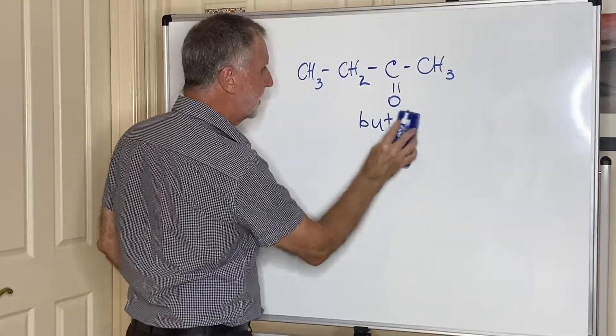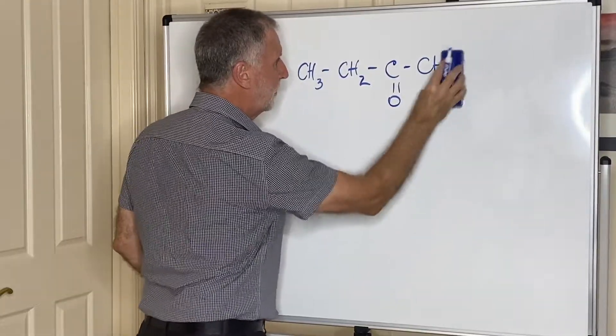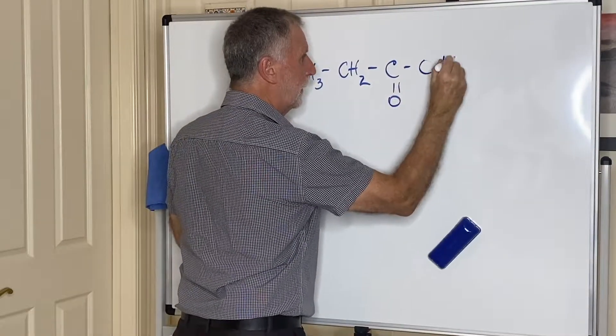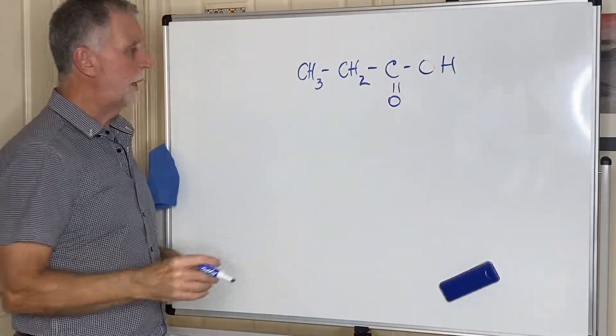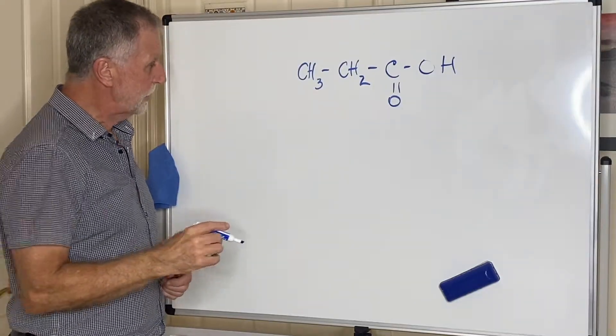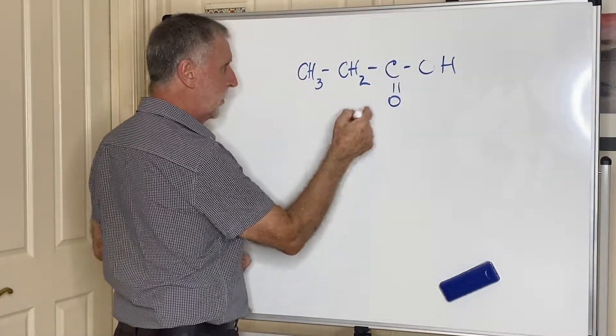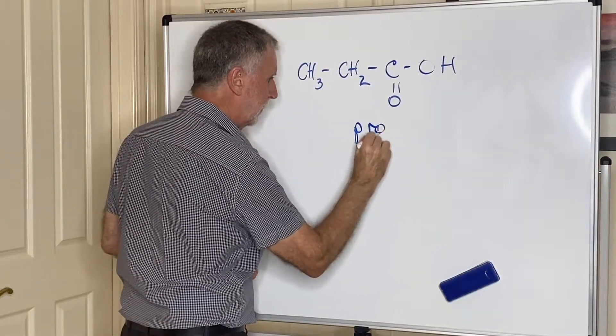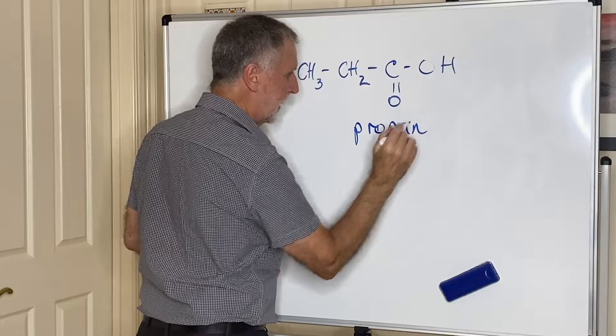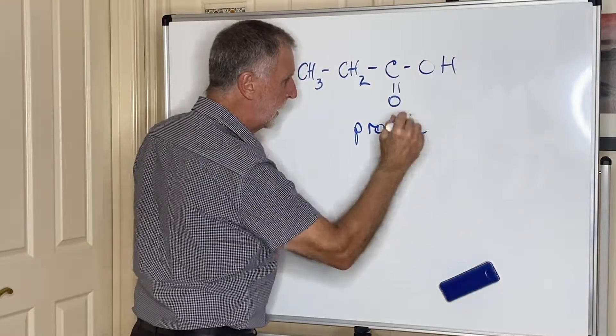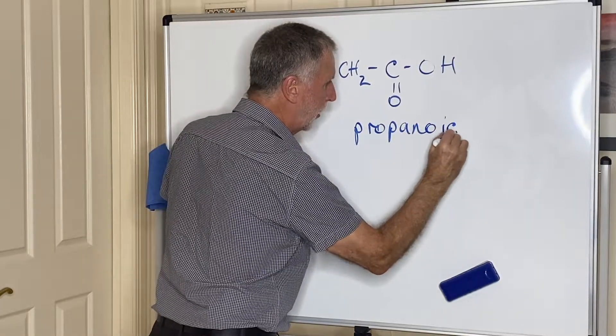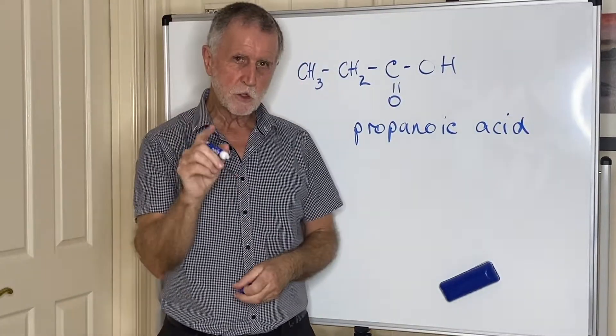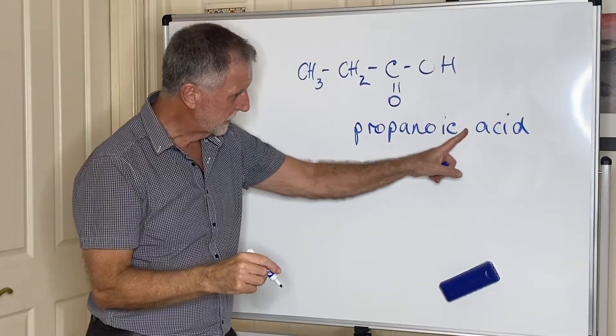The carboxylic acids will have this group, COOH. To name this, we start with our carbon number which in this case is propane. You take the alkane, drop the E, add the ending -oic acid. This is the first naming that has a gap. Propanoic acid is two separate words.